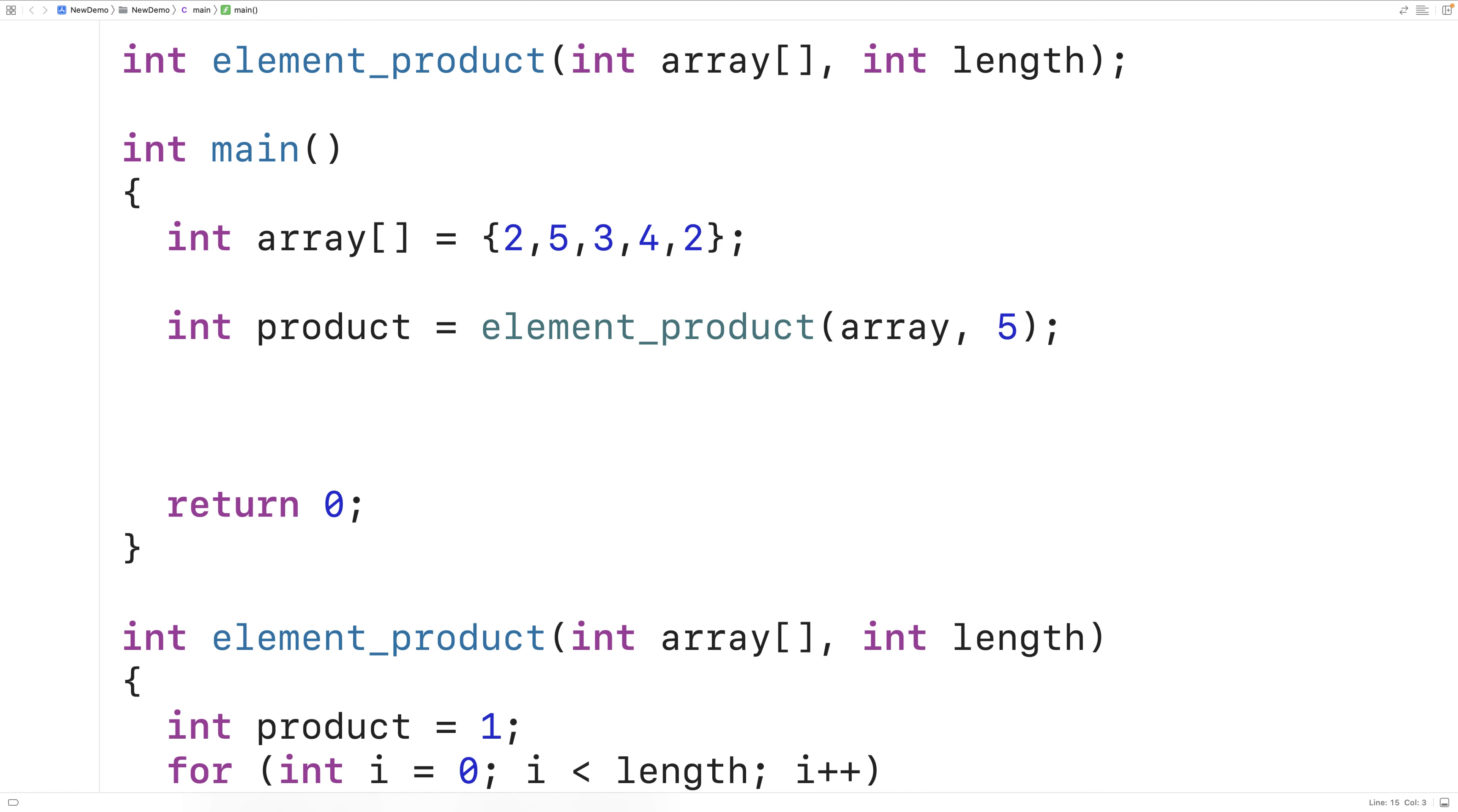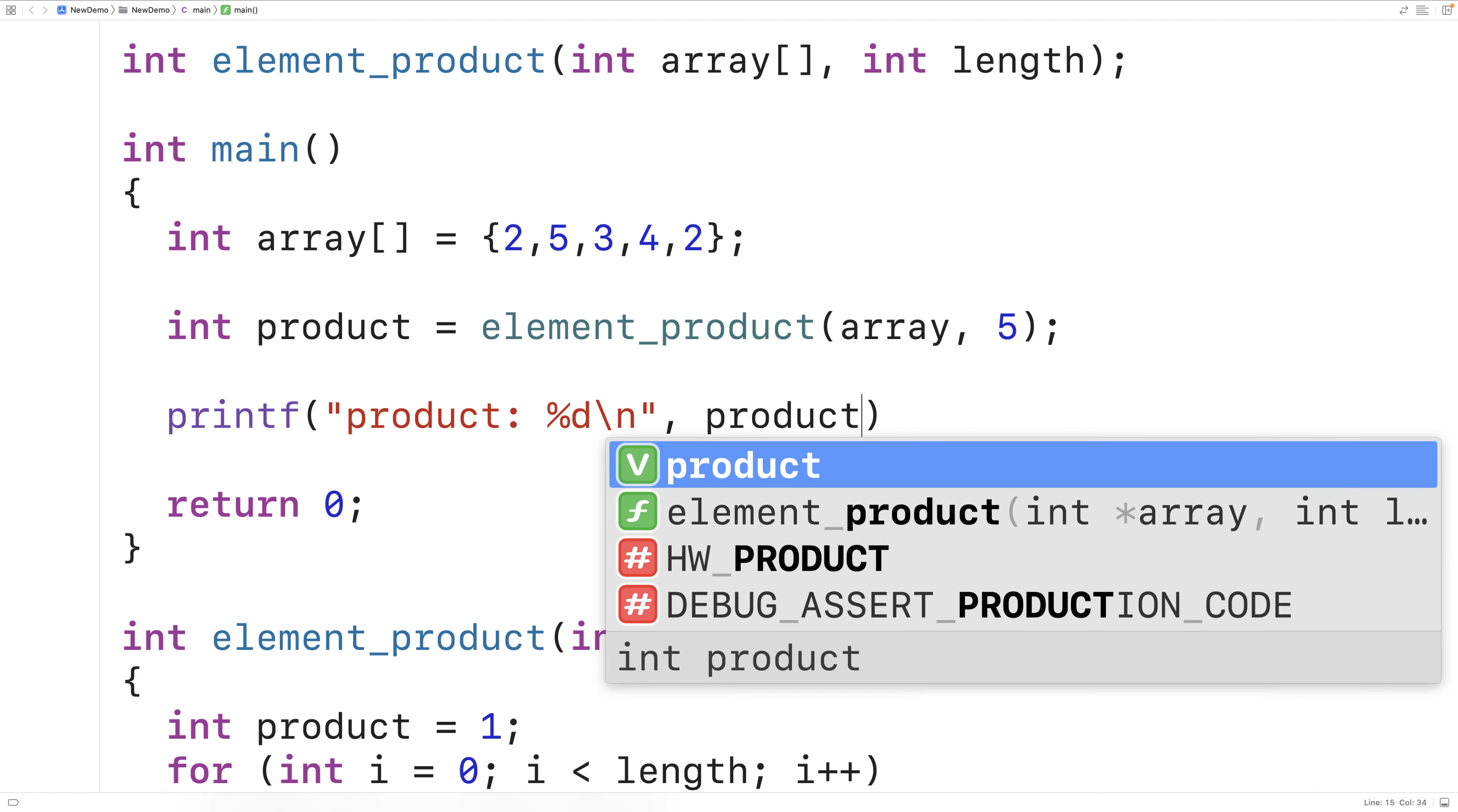Then we'll print out the result. We'll have printf, product, percent d, backslash n, and we'll output the product here.